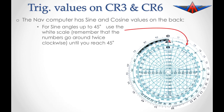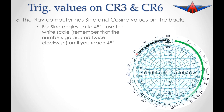Starting at 0 — remembering the numbers go around twice — we come around to 1 degree, 1.5, 2, 2.5, 3, 3.5, 4, 4.5, 5, 6, 7, 8, 9, 10, continuing all the way up to 45. The first time we go around gets us up to about 6 degrees and the second time brings us up to 45 degrees.